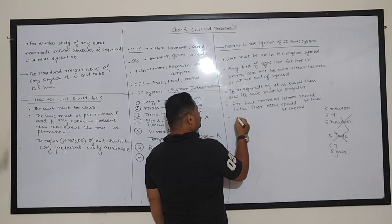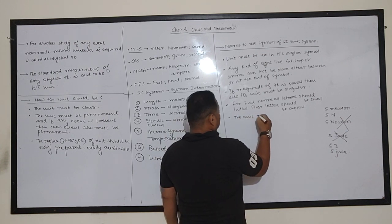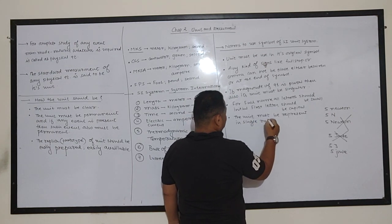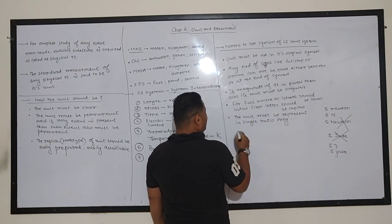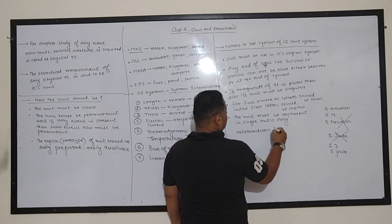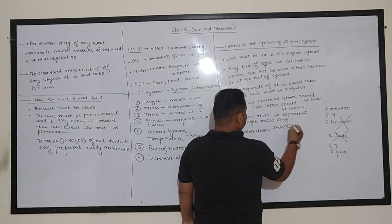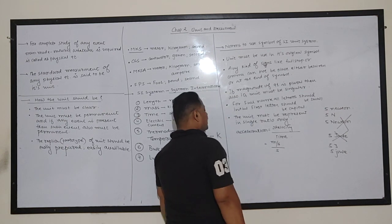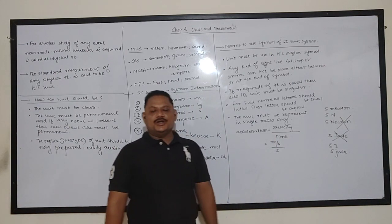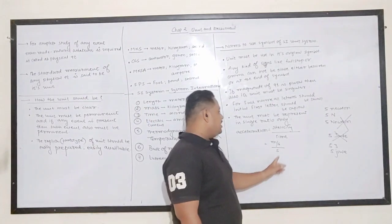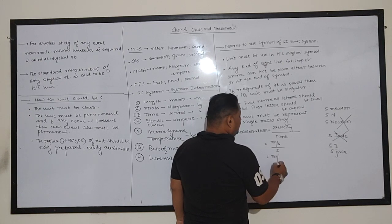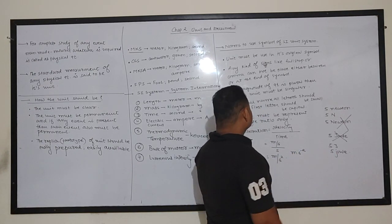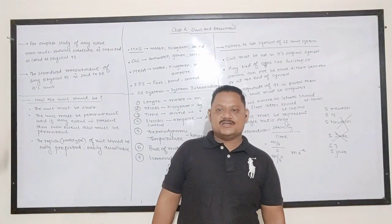Fifth point: the unit must be represented in single ratio only. For example, acceleration = velocity / time. Velocity's unit is meter per second and time's unit is second, so you cannot represent acceleration's unit as two separate ratios. The unit must be represented in terms of a single ratio only — either as meter per second square (m/s²) or as meter into second raised to minus 2 (m·s⁻²). These are the fundamental norms to use symbols of any SI unit system.